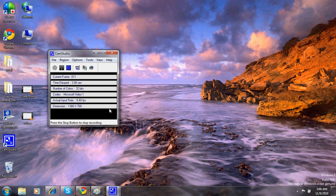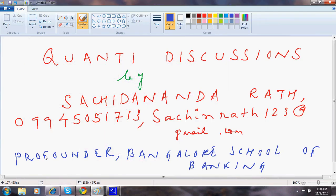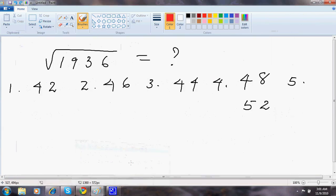Welcome back. In today's discussion I'll be going with how to get the square root of a number without using the traditional method. Questions will look like this: square root of 1936 is how much?